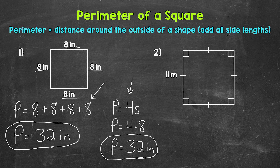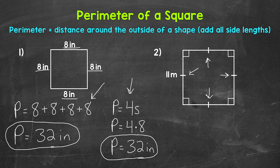Let's move on to number 2, where we have a square with sides that are 11 meters. You'll notice that we only have one side labeled. That's because this is a square, and we know all of the sides are the same. So all of the sides are 11 meters. These tick marks show us that all of the sides are the same — we have one tick mark on each side, indicating that they are all the same.